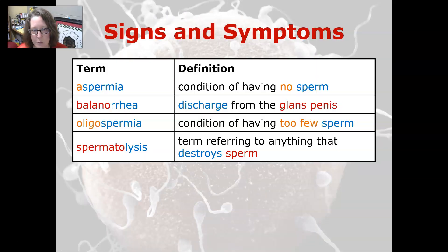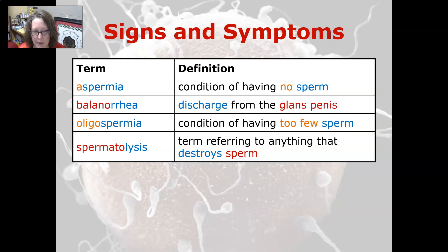For signs and symptoms: aspermia is a condition of having no sperm. Balanorrhea is a discharge from the glans penis. Oligospermia is a condition of having too few sperm. And spermatolysis is a term referring to anything that destroys sperm.